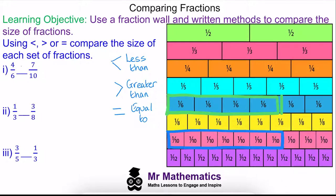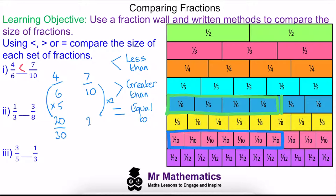So we'll write four sixths is less than seven tenths, and we can show this using a written method with equivalent fractions, where 30 is a common denominator of six and ten, so we'll write both fractions over 30. We'll multiply four sixths by five to get 20 thirtieths, and seven tenths by three to get 21 thirtieths. You can see that 20 over 30 is smaller.